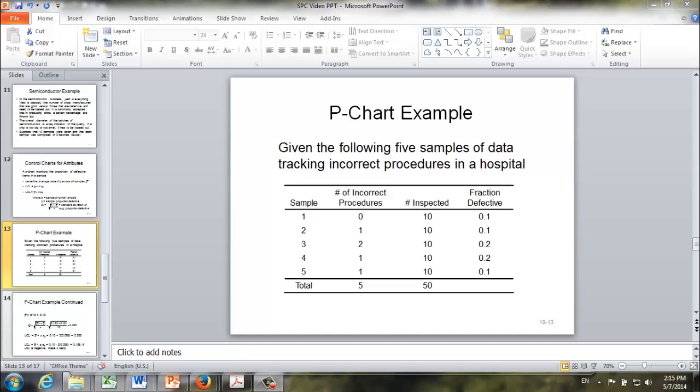Now let's look at an example of how p-chart works. We have the following information: five samples of data tracking incorrect procedures in a hospital, and the sample size is 10. That is to say, 10 procedures are inspected in each sample. So in total, we inspected 50 procedures, out of which five of them are incorrect.